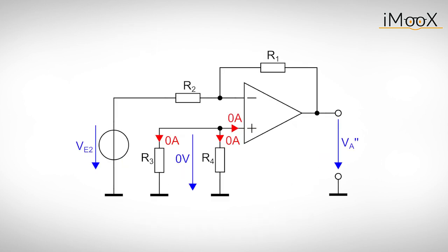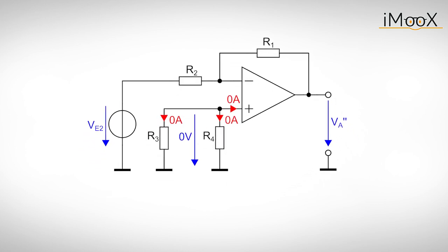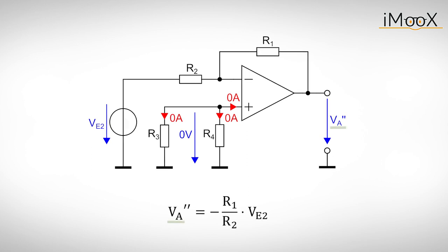Now we go for the second input voltage Ve2 and redraw the circuit. This is an inverting amplifier with additional resistors at the non-inverting input. As our rules state that there is no current flowing into the input of the operational amplifier, there is also no current flowing through the resistors. Consequently, the voltage drop over them and the potential at the non-inverting input is zero volts. This means this circuit behaves like an inverting amplifier and we can write the second output voltage Va''.